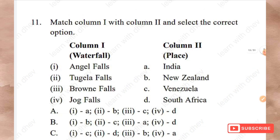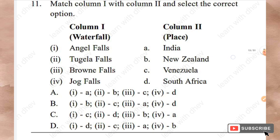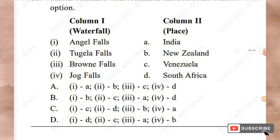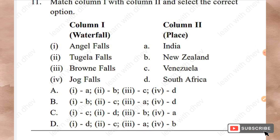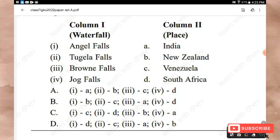Question 11: Match Column 1 (waterfall names) with Column 2 (locations). Angel Falls is in Venezuela, Tugela Falls is in South Africa, Brownie Falls is in New Zealand, and Jog Falls is in India. The correct answer is Option C.